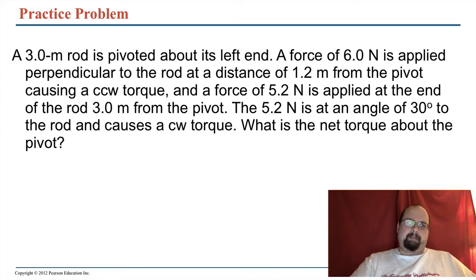So here's a practice problem. You've got a 3 meter rod that's pivoted on the left end. And a force of 6 newtons is applied perpendicular to the rod, a distance of 1.2 meters from the pivot, causing a counterclockwise torque. We're going to call that a positive torque. Counterclockwise is positive for us. A force of 5.2 newtons is applied 3 meters from the pivot and at an angle of 30 degrees to the rod, causing a clockwise torque, a negative torque. So find the net torque about the pivot.